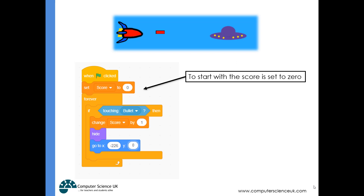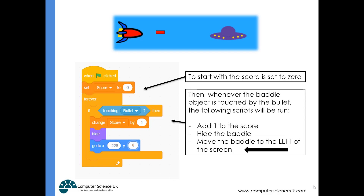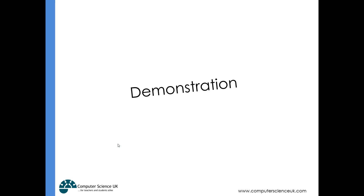Here's an example of the script that allows that. We start by setting the score to zero when the game starts, then we have a forever loop constantly checking if the baddie object is touched by the bullet. The moment it is touched, three things happen: we add one to the score, hide the baddie, and move the baddie over to the left-hand side so its x position is less than minus 225. That way the other script picks it up and moves it to the right-hand side with a random location.